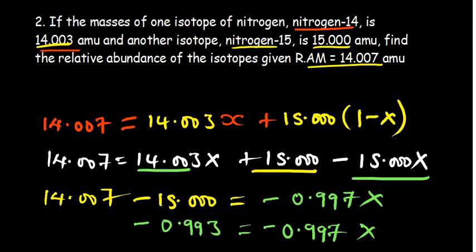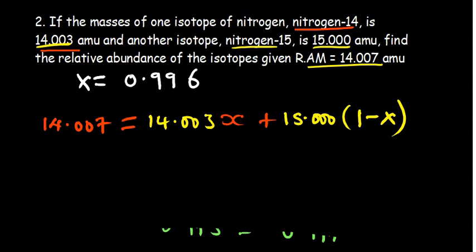The value of x that I'm getting is equal to 0.99...0.996. Since we have the value of x, we can try to look at what we had. I had noticed that the abundance of nitrogen-14 was attached to x. I said x was divided by 100 because we used x and 1 minus x.